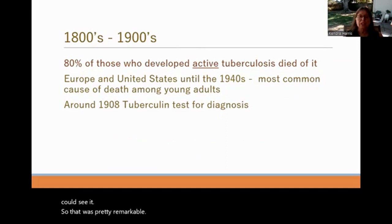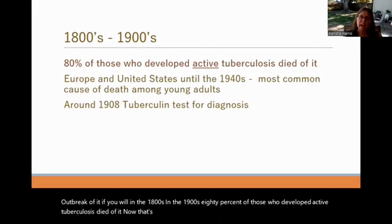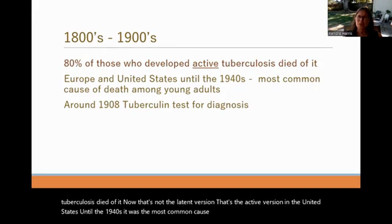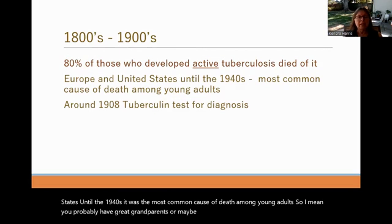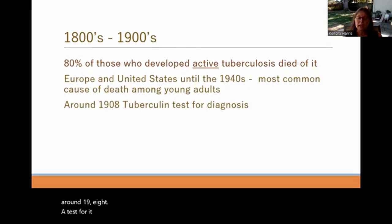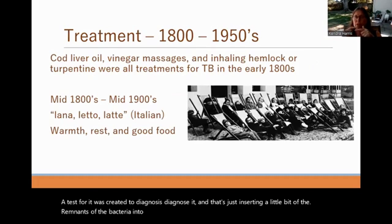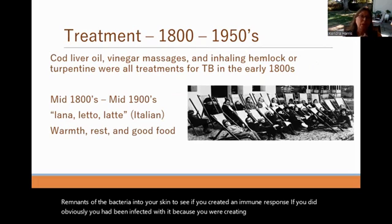Going back to the outbreak in the 1800s and 1900s: 80% of those who developed active tuberculosis died of it. In the United States until the 1940s, it was the most common cause of death among young adults. Around 1908, a skin test was created to diagnose it — inserting a small amount of bacterial remnants into the skin to see if the patient created an immune response. If they did, they had obviously been infected and were producing antibodies.